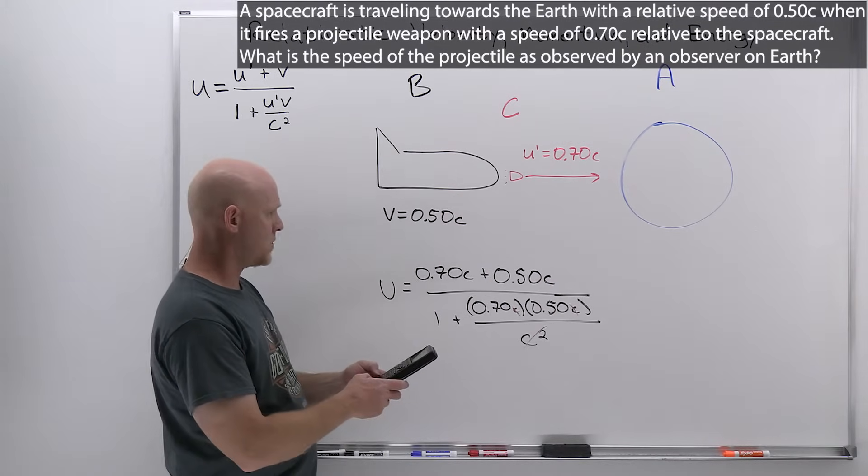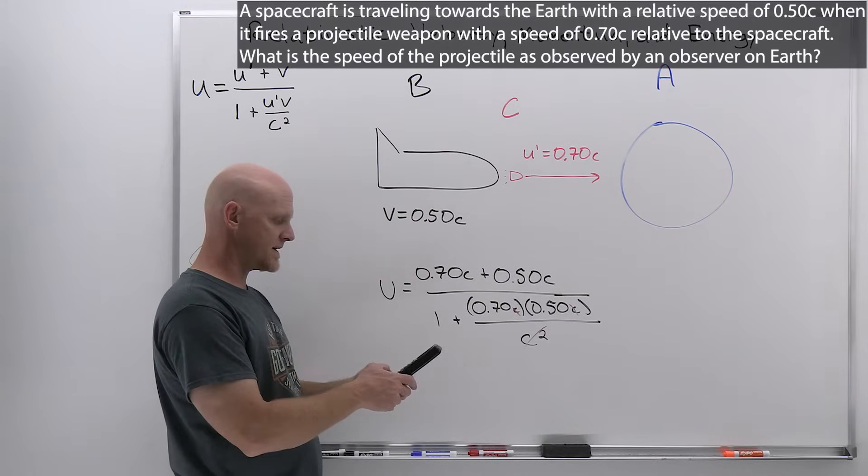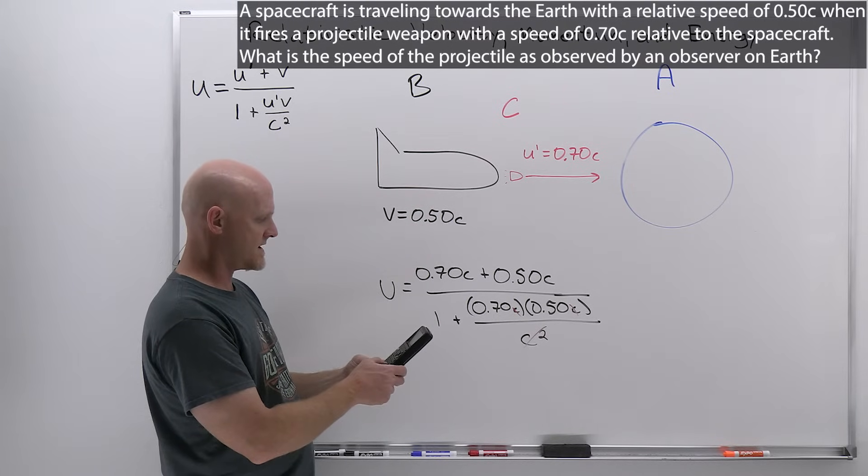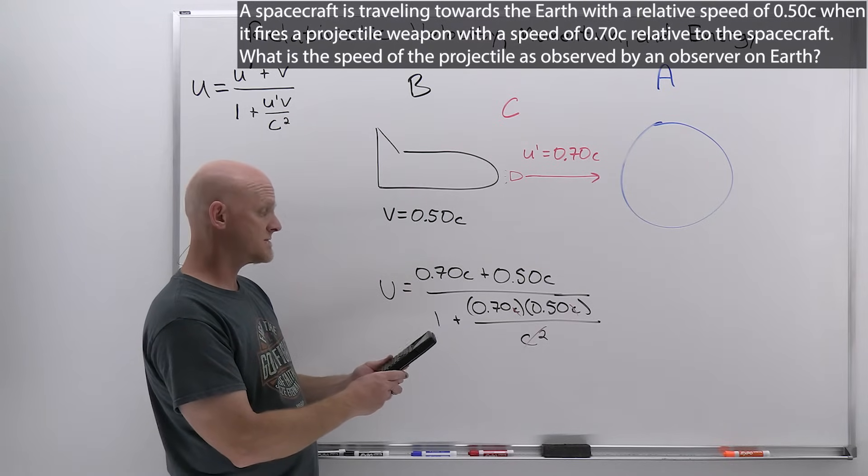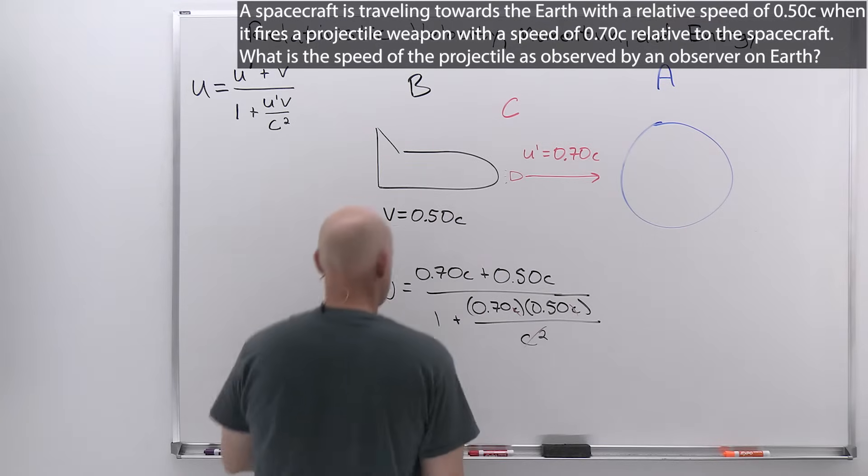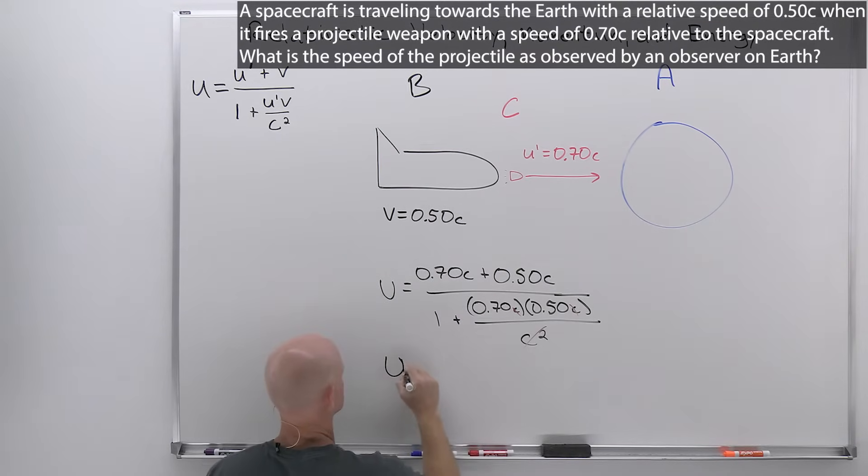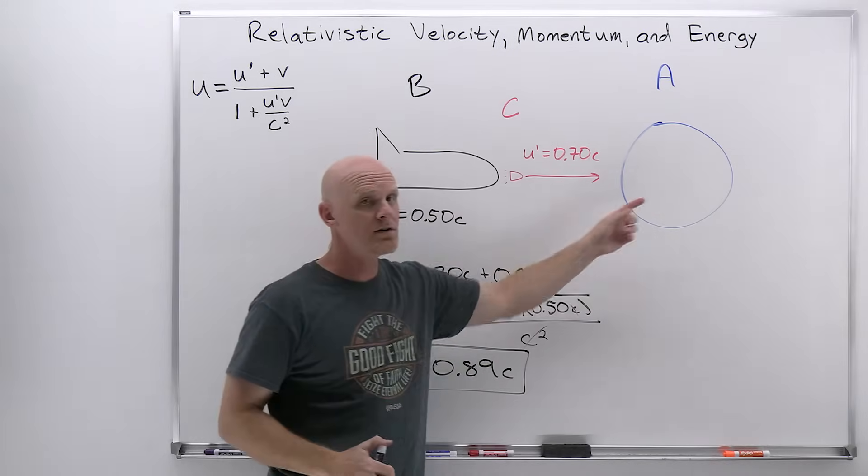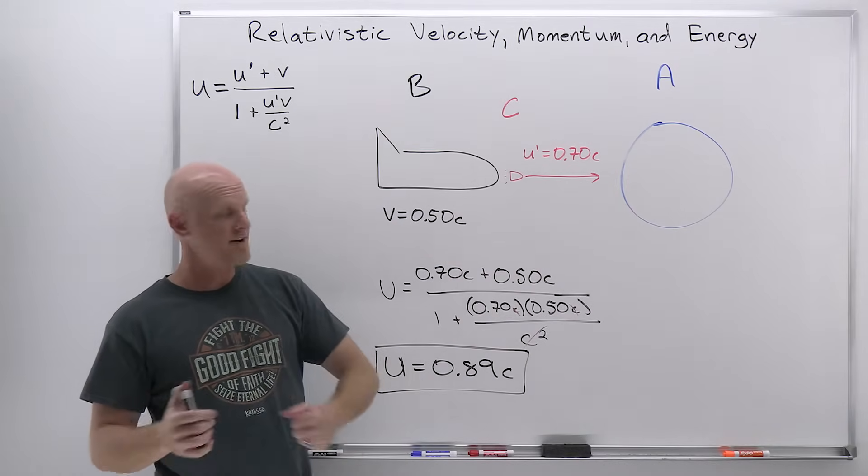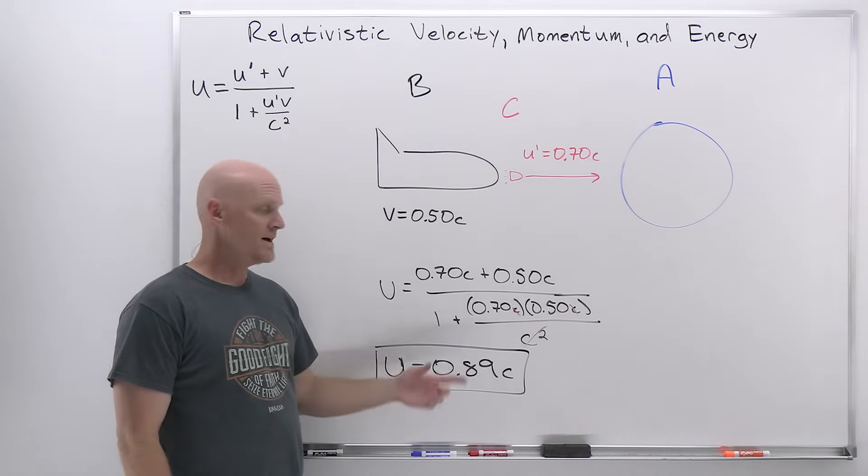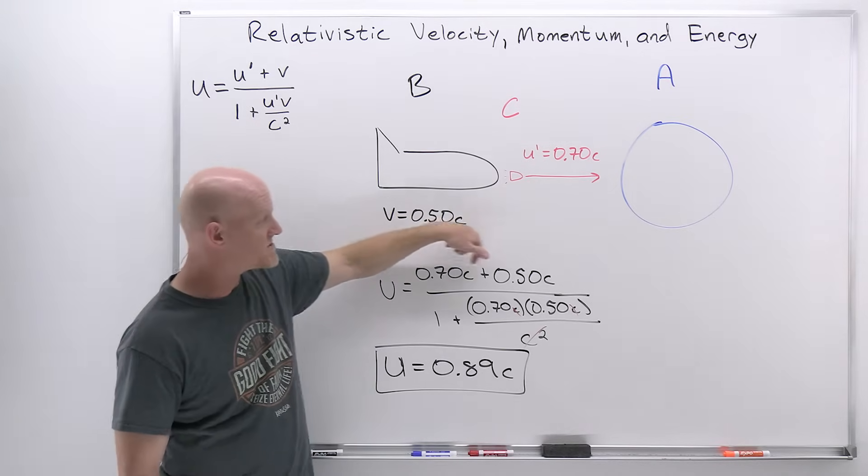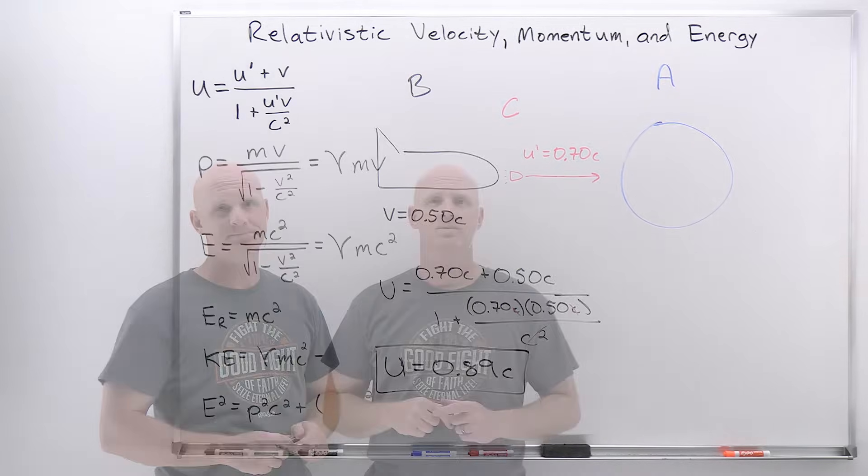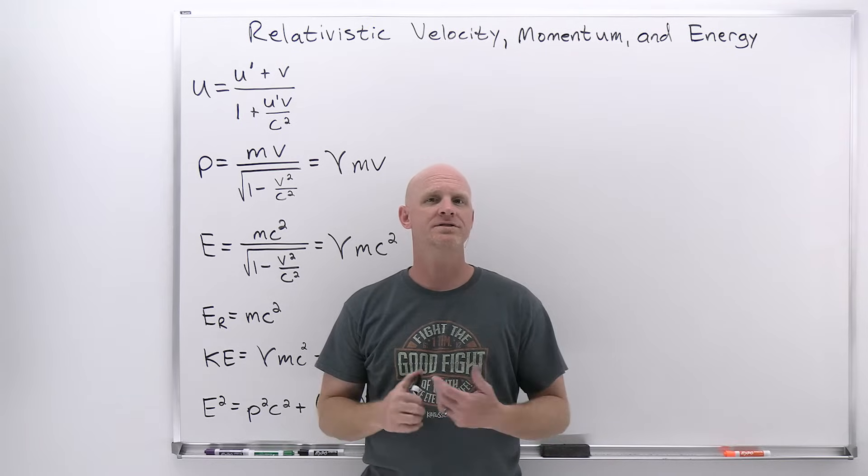I'm going to have 0.7 plus 0.5, it's times the speed of light at the end here, divided by parentheses, 1 plus 0.7 times 0.5. We're going to get two sig figs here, 0.89 times the speed of light. And so u, the speed of the projectile relative to the earth, is not 1.2 c, i.e. faster than the speed of light. It's just 0.89 c instead, and is not faster than the speed of light. But the faster this combination of speeds gets, the closer this relative speed to whatever your other inertial frame is gets to the speed of light.